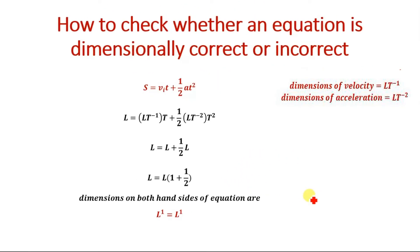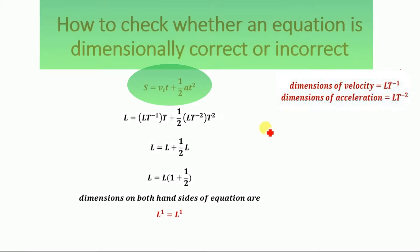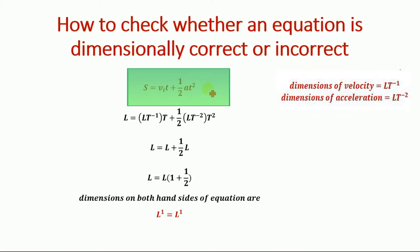Now we will determine whether the second equation of motion is dimensionally correct or incorrect. The second equation of motion is: displacement S is equal to V_i T plus one-half A T squared, where S is the displacement, V_i is the initial velocity, T is the time, one-half is just a number, and A is the acceleration.